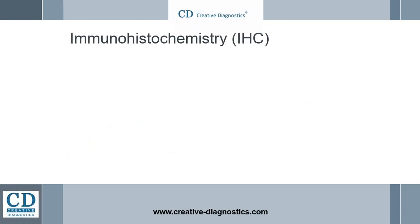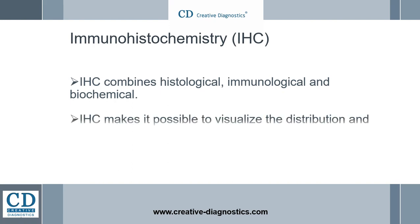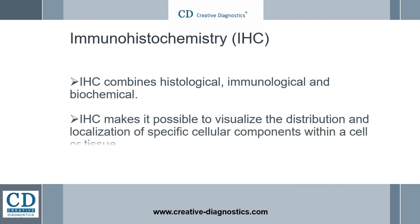Immunohistochemistry combines histological, immunological, and biochemical techniques for the identification of specific tissue components by means of a specific antigen-antibody reaction tagged with a visible label. Immunohistochemistry makes it possible to visualize the distribution and localization of specific cellular components within a cell or tissue.